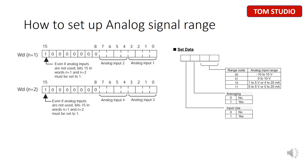In this slide, we are talking about how to use 2 words to set up the analog signal. As the slide shows, it is necessary to utilize one single word to set up two analog inputs. From the right side, the first digit is for analog input 1 and the second digit is for analog input 2. Bit 15 is for enabling the analog inputs.